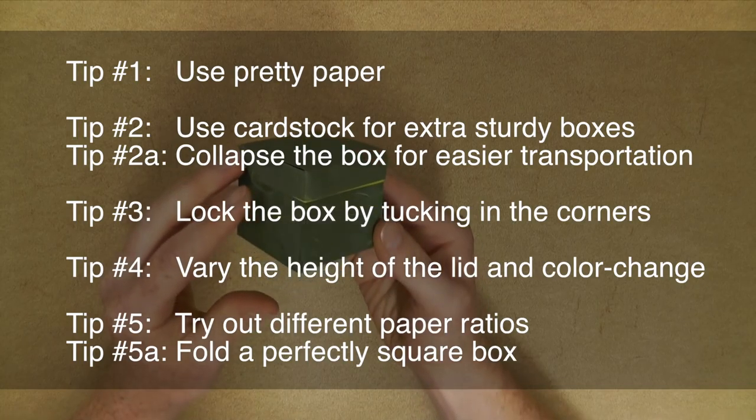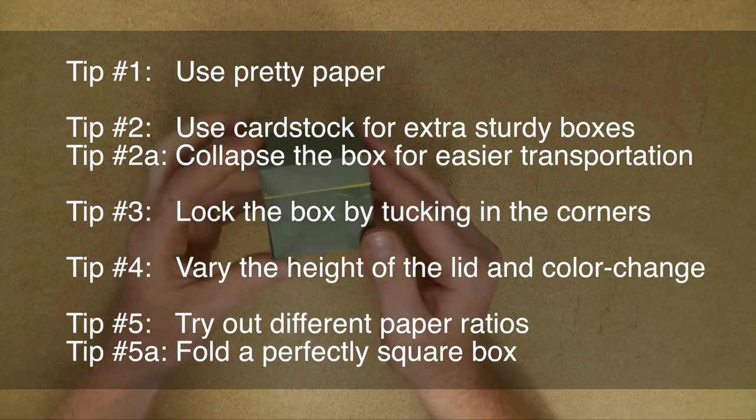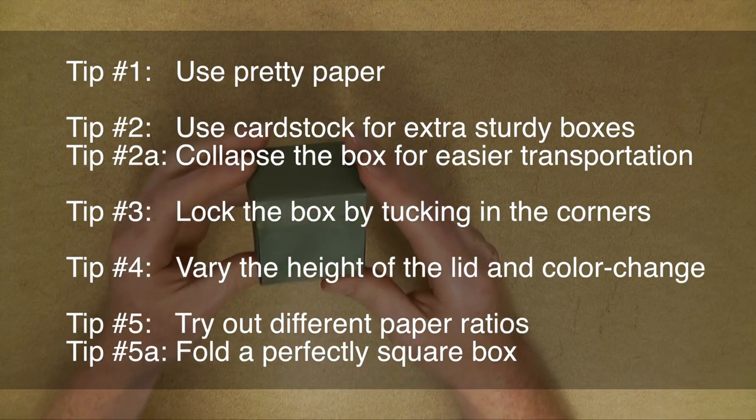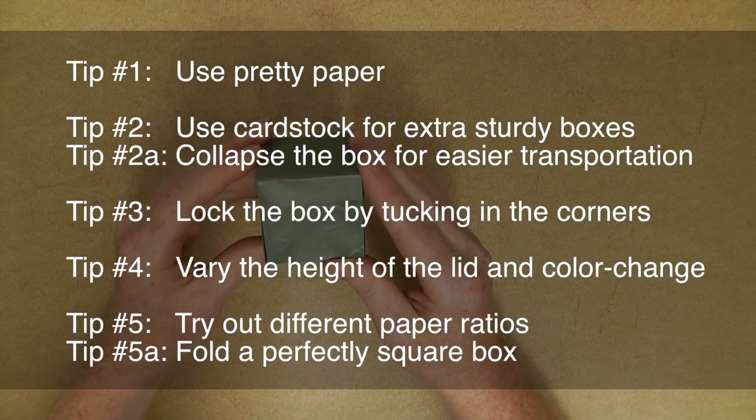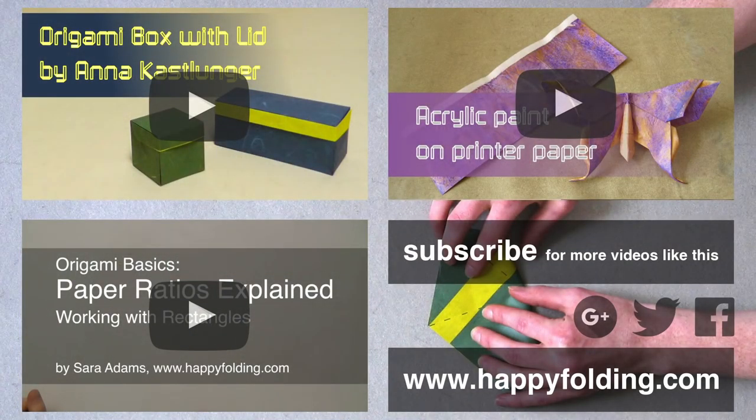So I hope you enjoyed those five or perhaps a couple more tips on how to make that box by Anna Kastlunger even more special. And I'd love to hear from you in the comment section which tip you liked most, and if you have your own tip, do share it with everyone. That would be absolutely grand. And a couple more pointers here. First, of course, if you haven't folded the box yet, do head over to my tutorial on it. And I've got a video on how to use acrylics to make printer paper look extra special. And finally, I was talking about paper ratios, so 2 by 3 and 3 by 4 and something. If you don't quite know what I mean by that, I've also got a video where I explain more about paper ratios. So I hope you enjoyed this video. And if you did, do give it a thumbs up, share it with your friends, and don't forget to subscribe to my channel so you don't miss my next videos. You can also visit my website happyfolding.com for more origami content. And as always, I do hope to see you around, and happy folding!